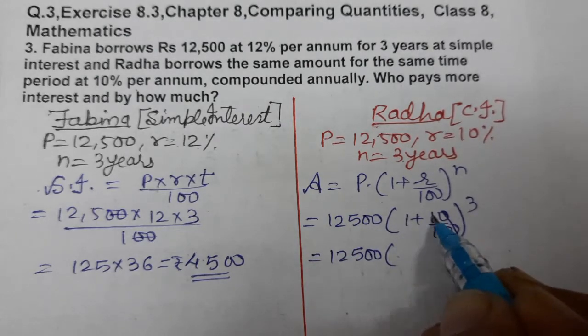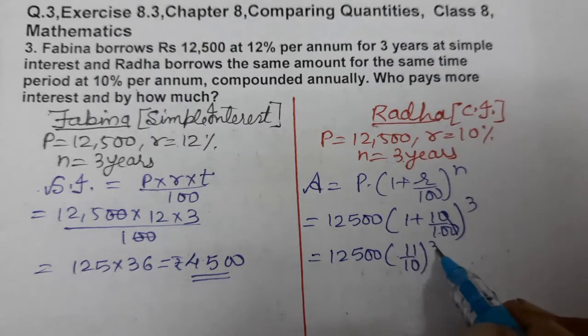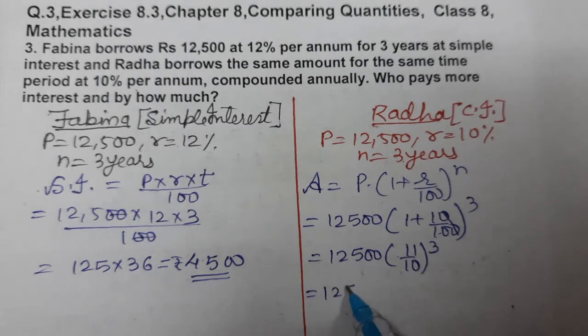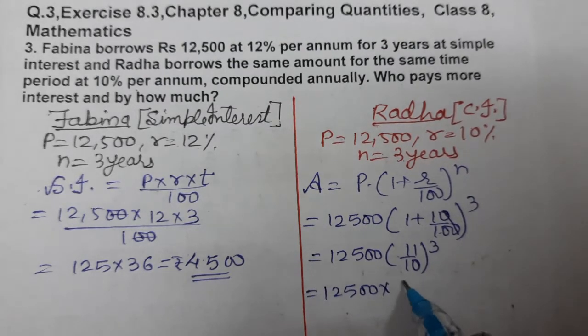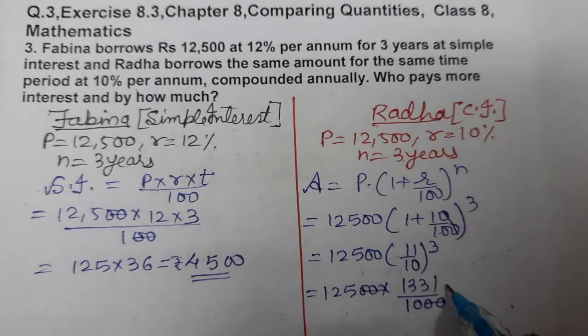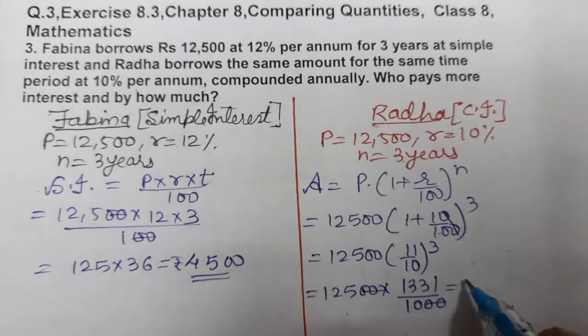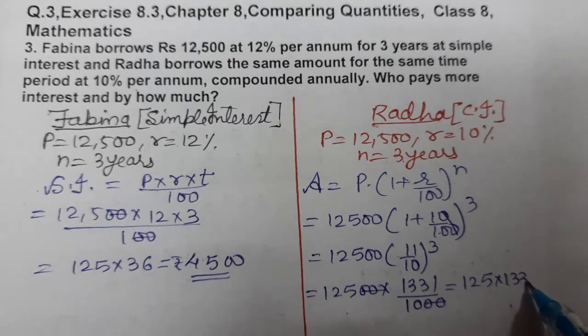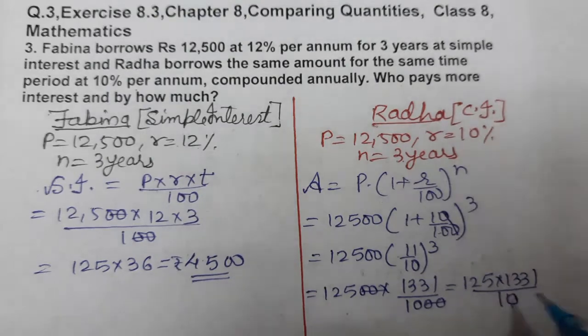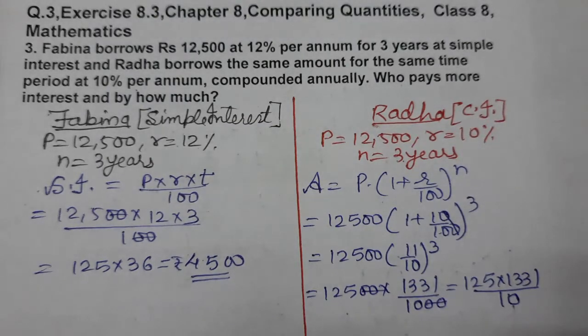11 plus 1 is 11, 11/10 cubed means 12,500 × 11^3, which is 1,331, by 10^3, which is 1,000. Cancel two zeros and multiply: 125 × 1,331 / 10, and we'll get the amount.